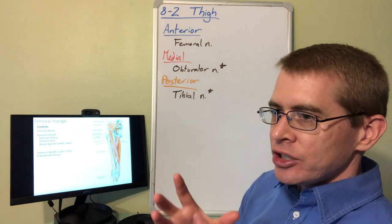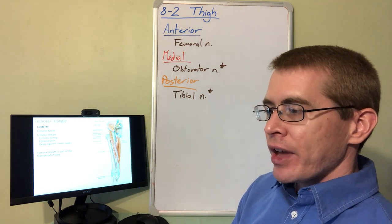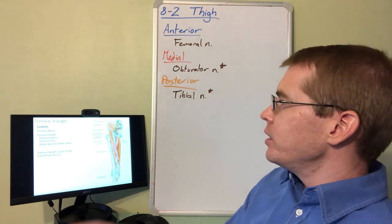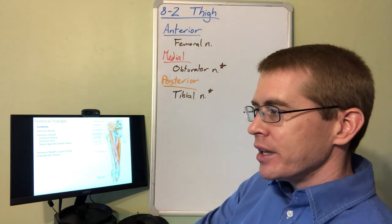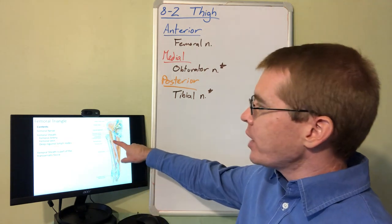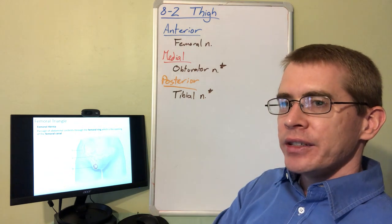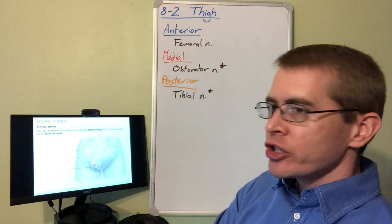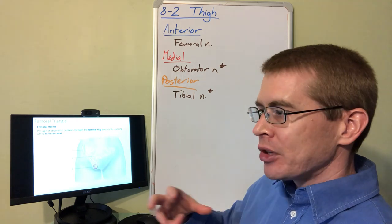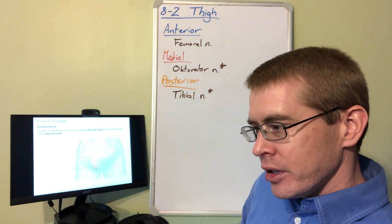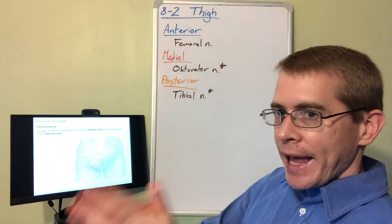Once you open that sheath, you'll find the femoral artery, vein, and lymph nodes. The femoral sheath is actually an extension of the transversalis fascia from the abdomen. That transversalis fascia opens up inferiorly to follow the external iliac branch of the common iliac artery into the femoral triangle. I mentioned in the last lecture about femoral herniation, and this is where that can occur, where abdominal contents can travel inferiorly into the femoral triangle and pierce that transversalis fascia anteriorly.